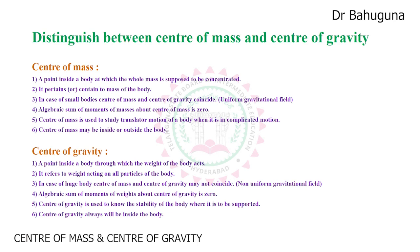Sixth point in center of mass: center of mass may be inside or outside the body. If you take a plate, center of mass is at the center of it. If you take a ring, center of mass is at the center of that circle, but the mass is along the circumference — nothing is inside. So center of mass is outside the body in the case of a ring. Whereas for center of gravity, sixth point: center of gravity always will be inside the body; it cannot be outside.